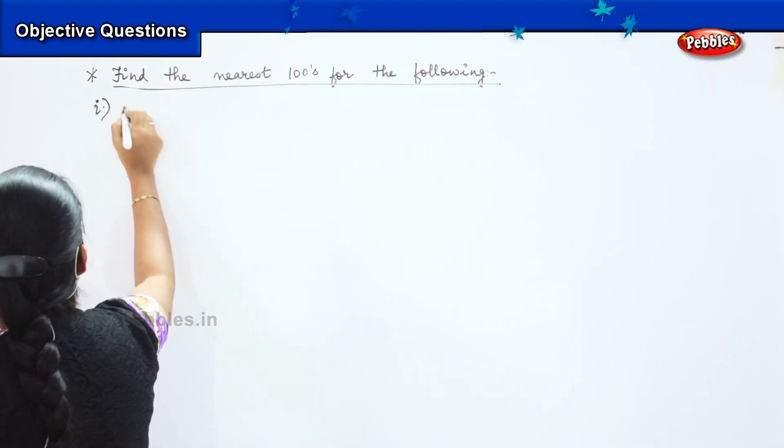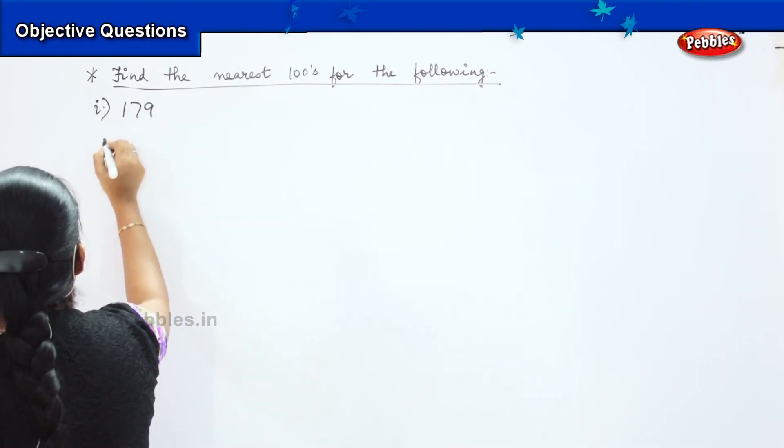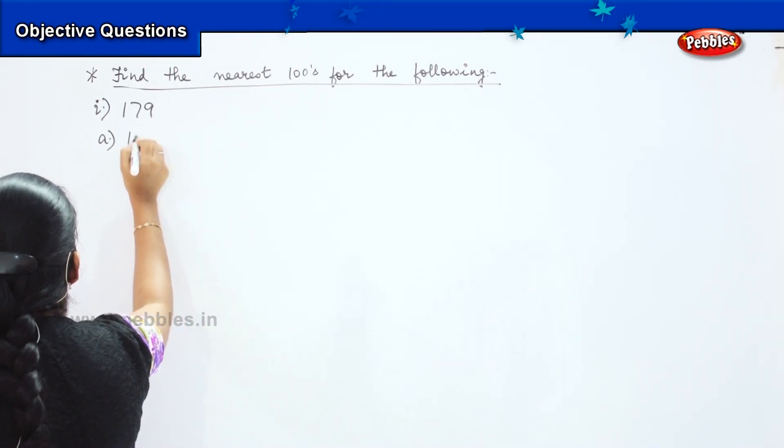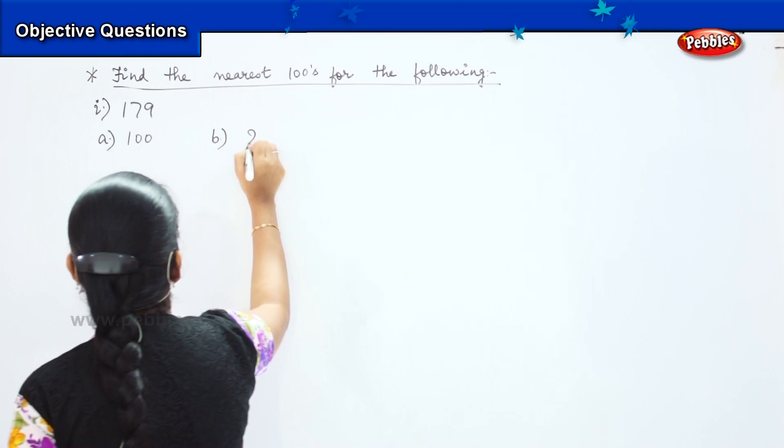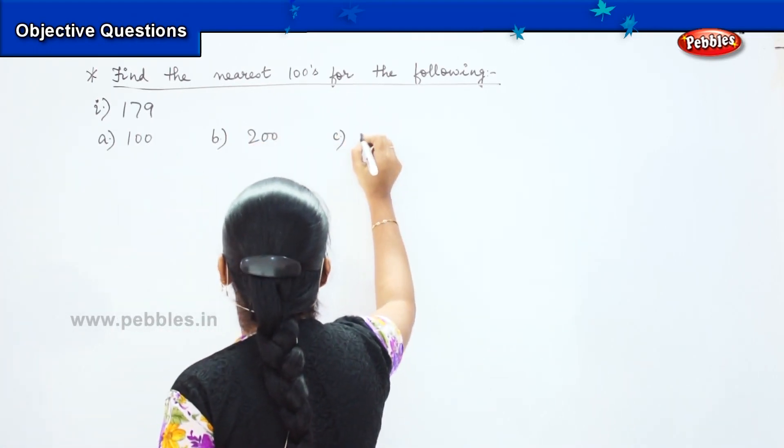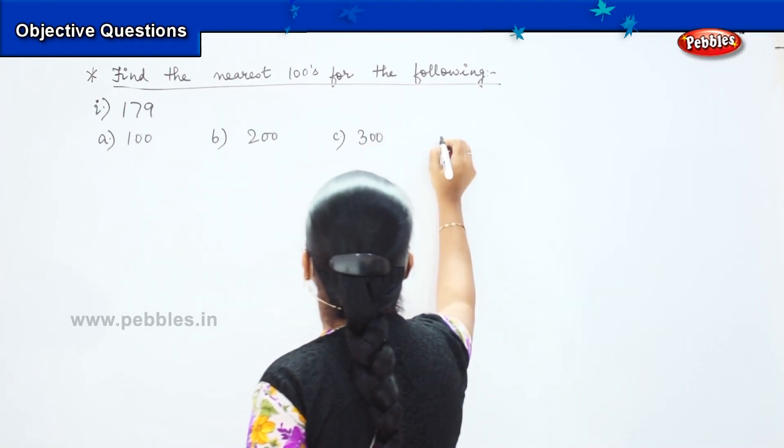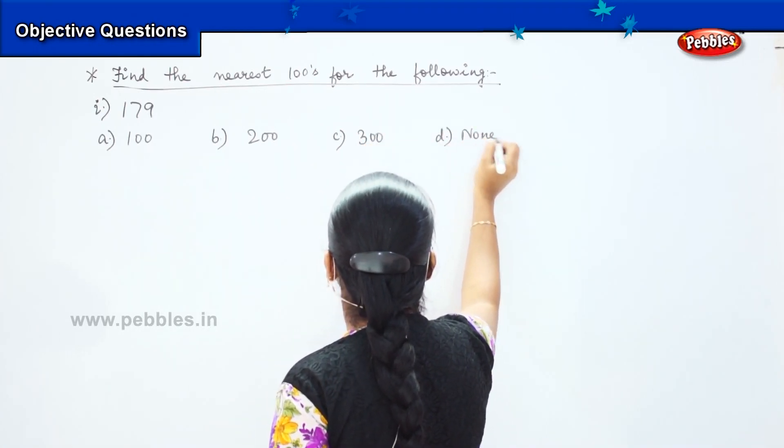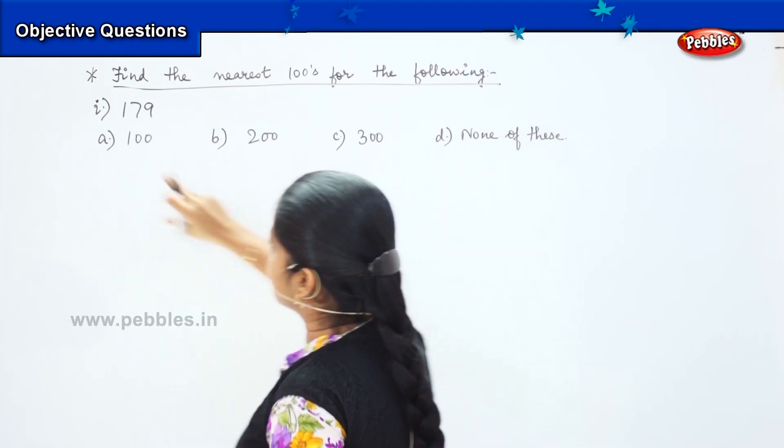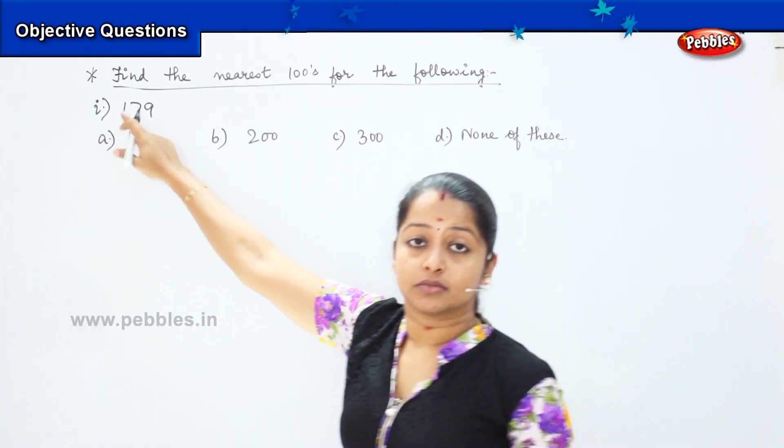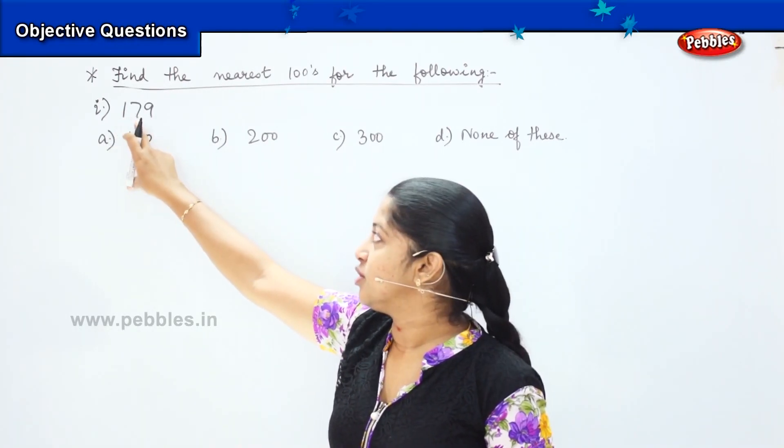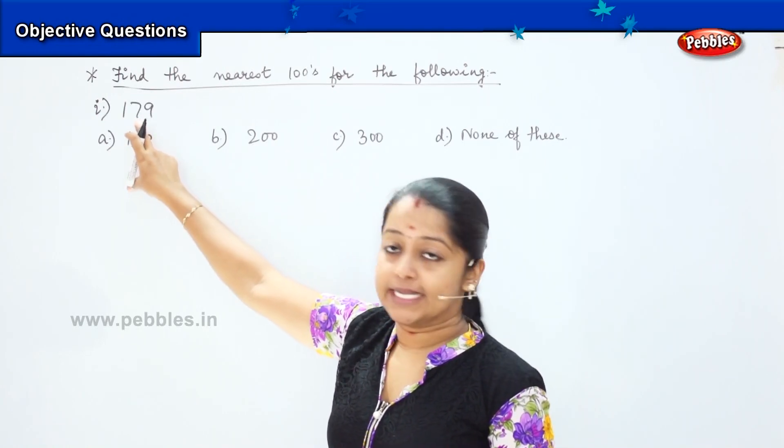The first question says you need to round off to the nearest hundreds and your options are 100, 200, 300, and none of these. Now, since I am asking you to do the rounding off of hundreds value, you need to check the next one which is the tens value.